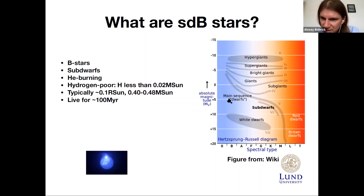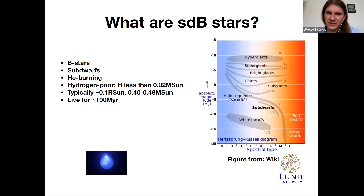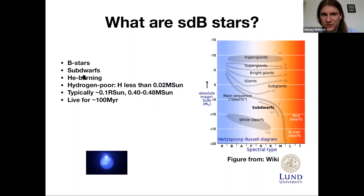From their location on the HR diagram, one can infer that they're helium-burning stars. From their spectra, one can infer that they're hydrogen-poor, with very little hydrogen. This is atypical — stars initially start as a mixture of helium and hydrogen, but here it's mostly helium-burning with very little hydrogen on top. Subdwarf B-stars have radii of about 0.1 solar radii and masses typically between 0.4 and 0.48 solar masses. Being helium-burning, they're relatively short-lived — only 400 megayears, short on galactic evolution timescales.